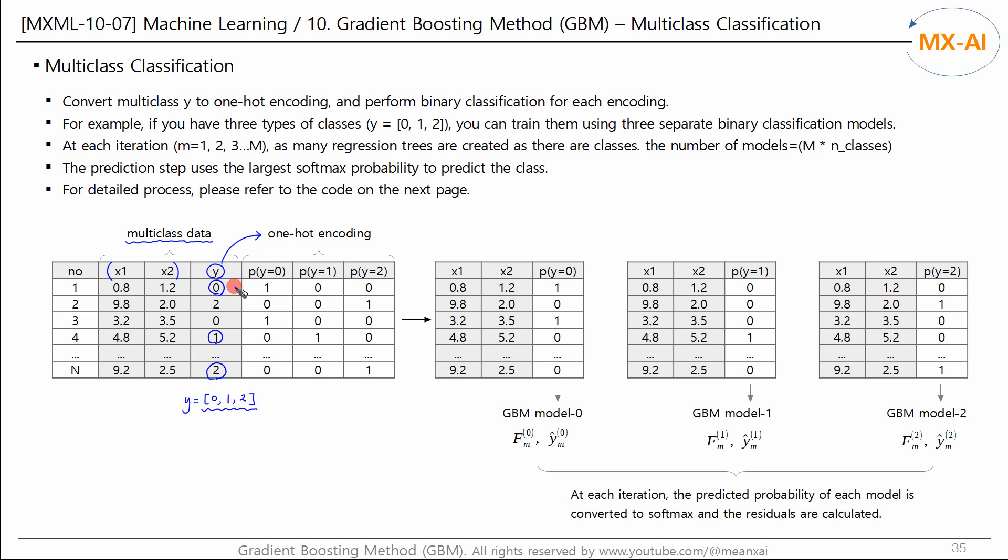Class 0 is converted to 1, 0, 0. And class 2 is converted to 0, 0, 1. The first column represents the probability that Y is 0, and the second column represents the probability that Y is 1. We now separate this data into three datasets as shown on the right.